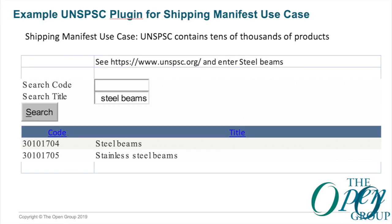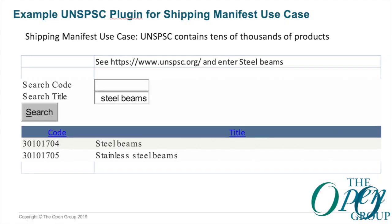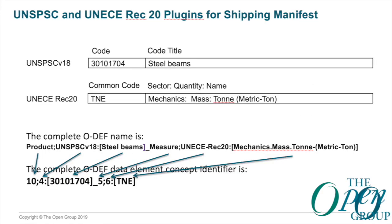Similarly, an example of the plug-in: when you go from port to port, export-import authorities want to know what's leaving the country, and before it arrives at the port, they want to know what's coming in. There's a United Nations standard, UNSPSC. If you go to that URL and enter the word 'steel beams,' you get two options — steel beams or stainless steel beams — each with a unique code associated with them. If you entered 'plants,' there are over a thousand different types, from live plants to cut plants to roses. The point is these codes can be used within the ODEF syntax.